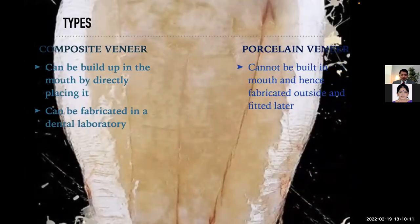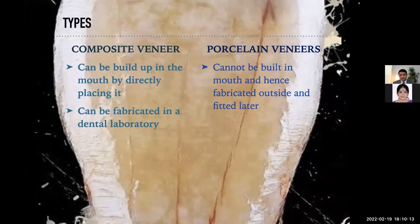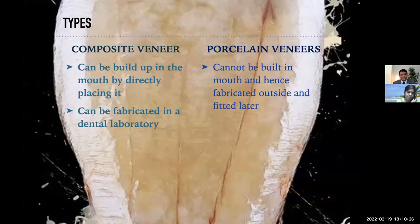There are two types of veneers. One is composite veneers, or direct veneers, and the other is porcelain veneers. Composite veneers can be built up in the mouth by directly placing them and can also be fabricated in the dental lab, whereas porcelain veneers cannot be built in the mouth and hence are fabricated outside and then fitted later.